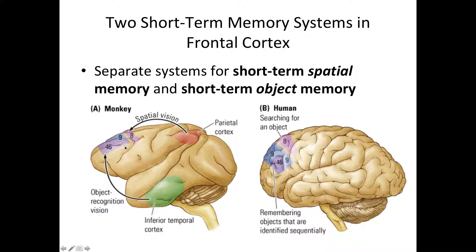Other researchers then wanted to study this in the human brain using PET scans and MRI scans to demonstrate similar functional anatomy relations in humans. There was an increase in area 8 when participants needed to search for an object they had previously remembered, and higher brain activation in areas 9 and 46 when participants had to remember objects identified sequentially. All this data suggests there are separate systems for short-term spatial memory and short-term object memory.